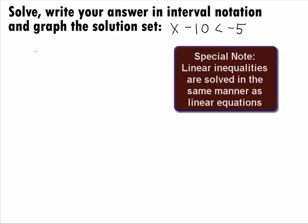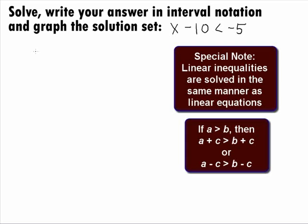Note that we solve linear inequalities in the same way that we do linear equations. We want to get our variable on one side and everything else on the other side by using inverse operations. When we add or subtract the same thing to both sides of an inequality, the inequality sign does not change.